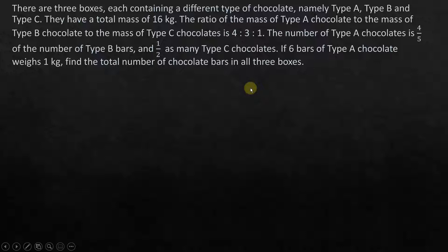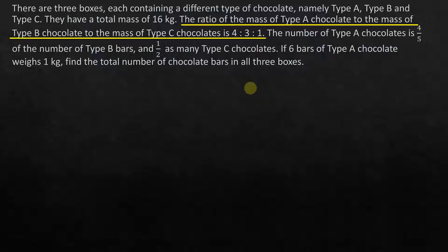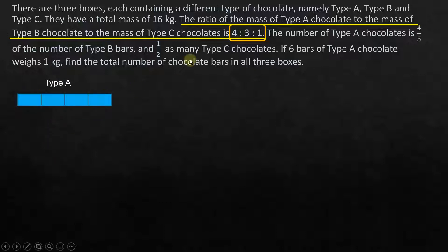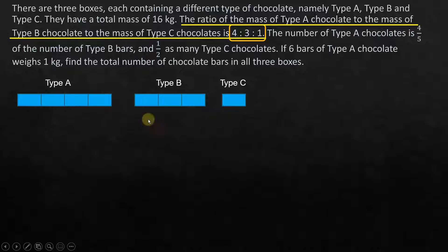Where do we start? We start at a point where we know the relationship between all three quantities — type A, type B, and type C chocolates — and that's with the mass. We know that the mass of type A to type B to type C is the ratio 4:3:1. So type A is represented with 4 units, type B is 3 units, and type C is 1 unit. These units are all of the same size.